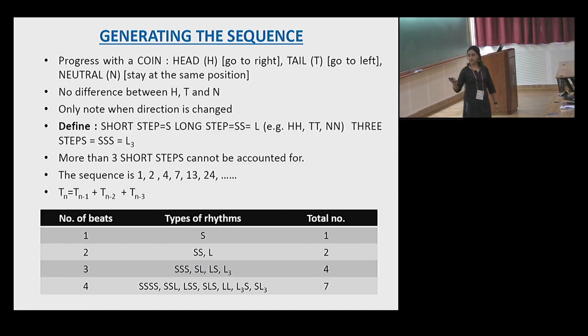L3 is the three short steps. These are the typical combinations I have here. This is the sequence generated here. Every fourth number is obtained from the previous three numbers. I can have that by erasing where it is going. It is just moving or not. From that, I can generate another recursion relation. Exactly like Fibonacci sequence. Any particular arrangement at a particular time step will depend on the arrangements of the previous three time steps.